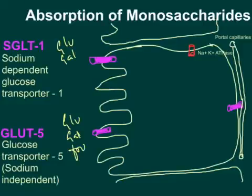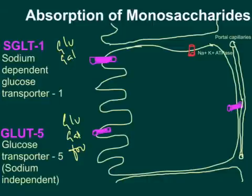Glucose, galactose, and fructose are the three monosaccharides present in the intestinal lumen after digestion of carbohydrates. These are polar molecules that need transporters to be absorbed into enterocytes. There are two kinds of transporters participating in the absorption of monosaccharides from the lumen of the intestine into the enterocytes.